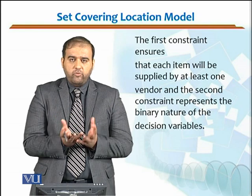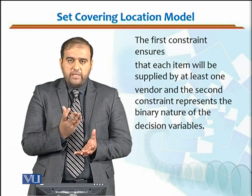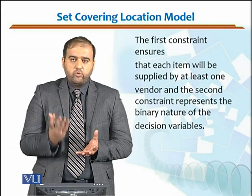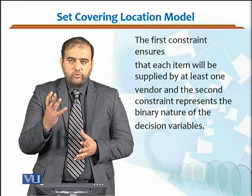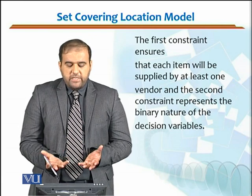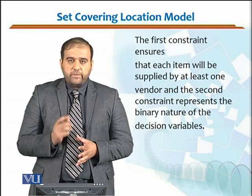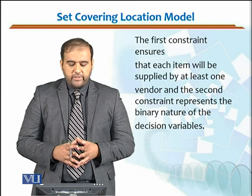When you have said the sum of yj's should be greater than or equal to 1 for all values of j, it means there should be at least one vendor for that item. The first constraint ensures that each item will be supplied by at least one vendor.